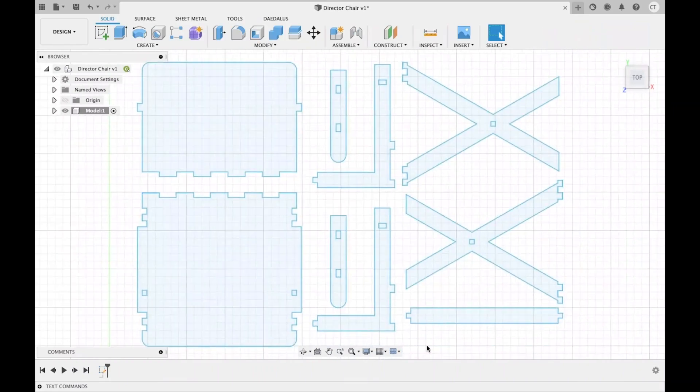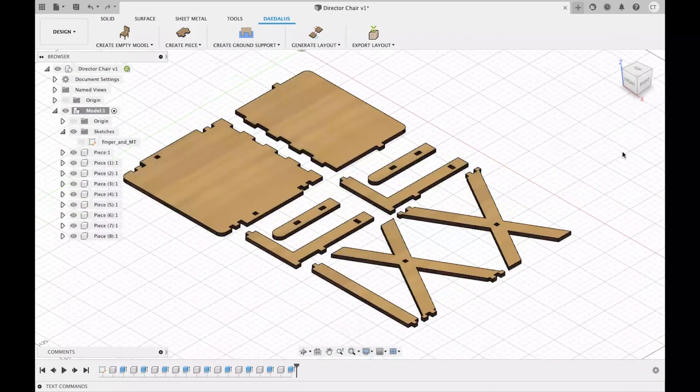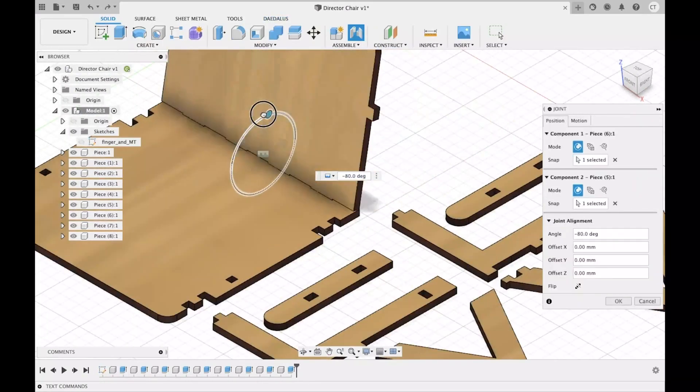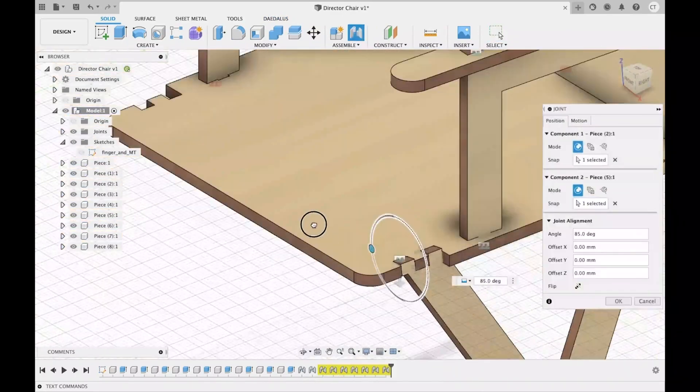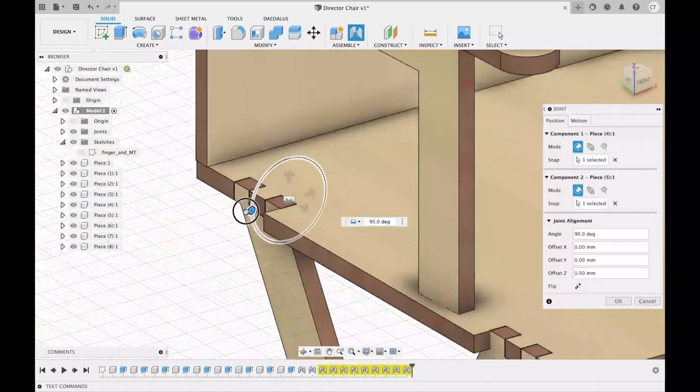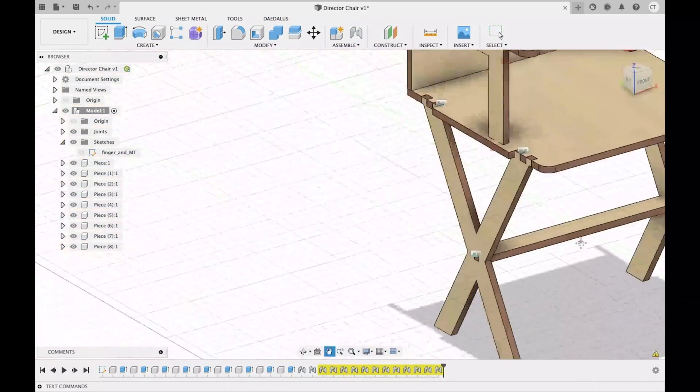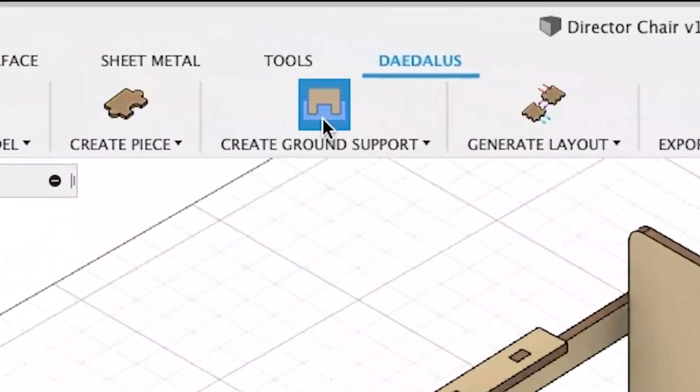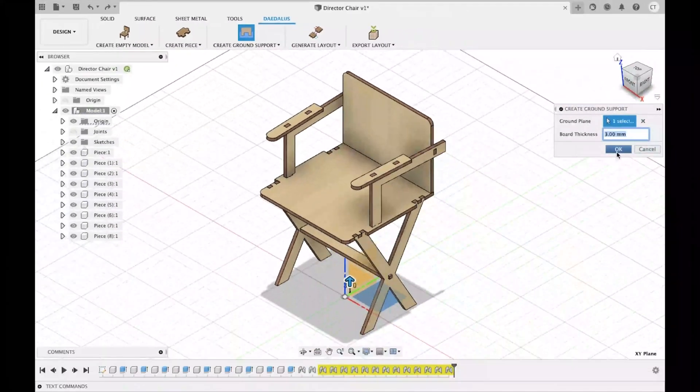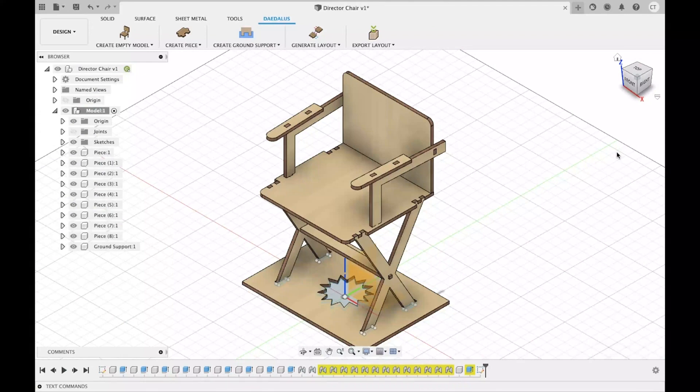The user can import sketches of a laser cut model and create an assembly with the joint assembly function in Fusion 360. They can choose whether to add support for stabilizing the laser cut model. Daedalus will then automatically capture the footprint of the laser cut model and provide the support area for it.